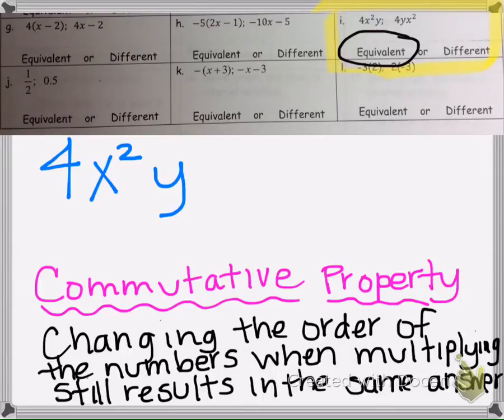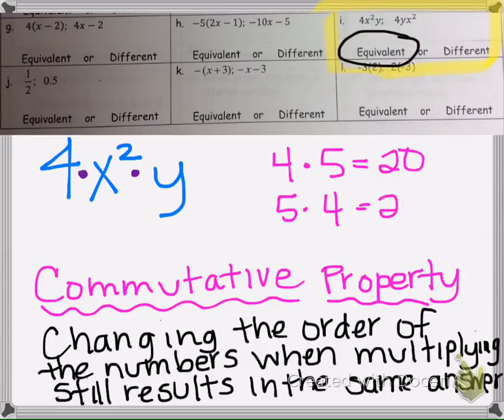So, in short, the commutative property tells us that if we're multiplying, which in this problem we are multiplying, because a 4 next to an x means multiply, and x squared next to y means multiply. Since we're multiplying, we have the commutative property for multiplication that says that when you multiply, like 4 times 5 is 20, well, so is 5 times 4. It's still 20. So that's what the commutative property tells us. It just states that we could switch the order.